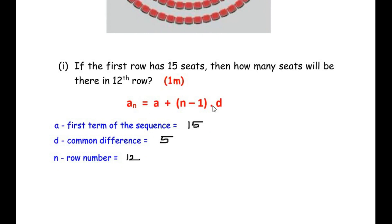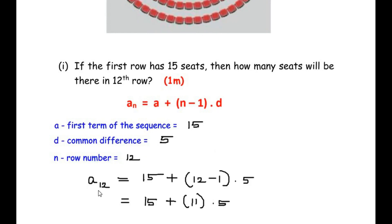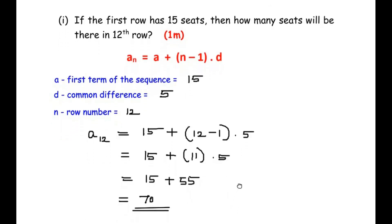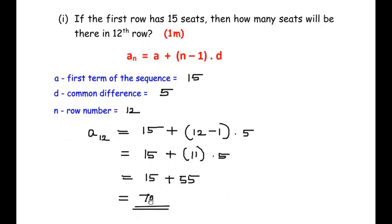Substituting the values: a_12 = 15 + (12 − 1) × 5. Simplifying: 12 − 1 = 11, so we get 15 + 11 × 5 = 15 + 55 = 70. So in the 12th row there are a total of 70 seats. Let us move on to the second sub-question.